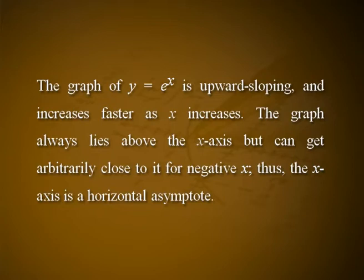The x-axis is a horizontal asymptote of eˣ. The slope of the tangent to the graph at each point is equal to its y-coordinate at that point. The inverse function is the natural logarithm log x. Because of this, some old texts refer to the exponential function as the anti-logarithm.